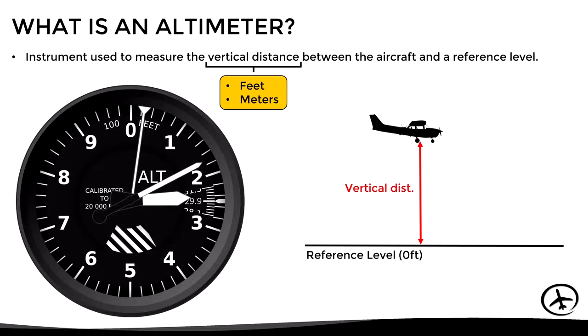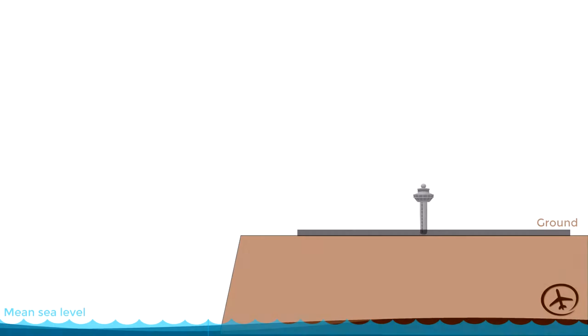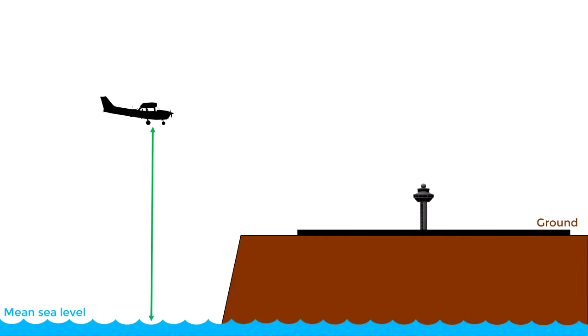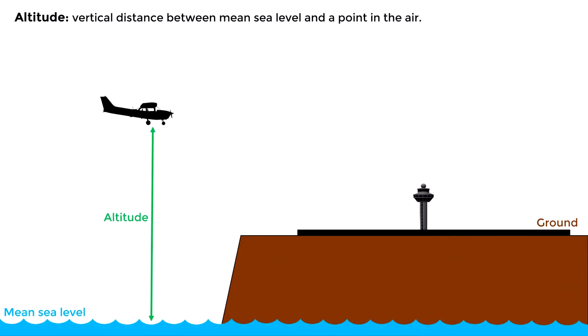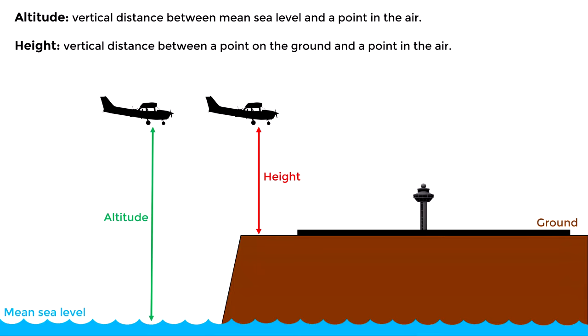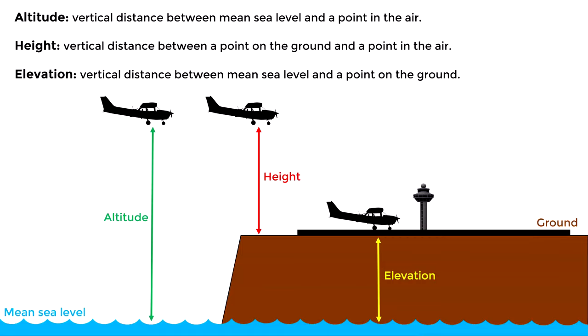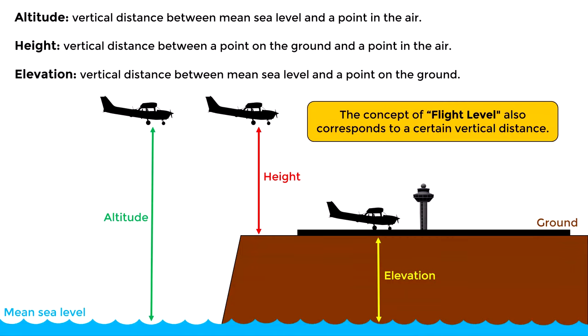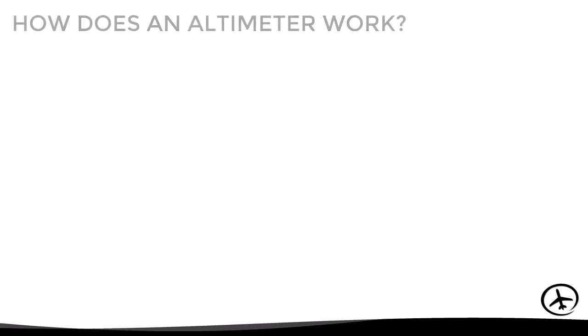If we measure the vertical distance between the mean sea level and the aircraft in flight, we will be measuring altitude. If we measure the vertical distance between a point on the ground and the aircraft in flight, we will be measuring height. And if we measure the vertical distance between the mean sea level and a point on the ground, we will be measuring elevation. The term flight level is also used but will be dealt with later.